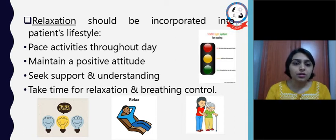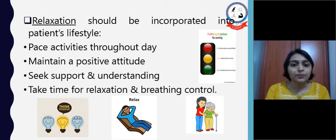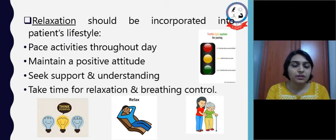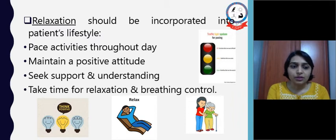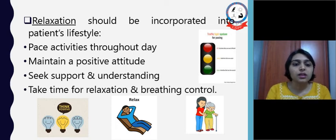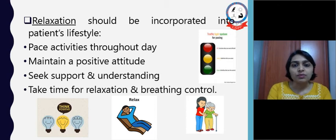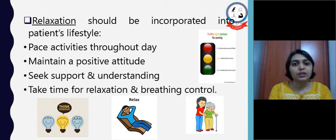Next is relaxation, which should be incorporated into the patient's lifestyle by pacing activities throughout the day. The patient has to write down which activities are very difficult and which are easier. By using the Borg scale we can assess the level of exertion and give advice accordingly. The patient should maintain a positive attitude and seek support from any person or equipment when required to avoid excessive exertion, and take time for relaxation and breathing control as well.